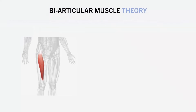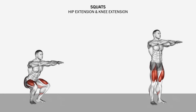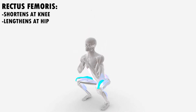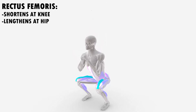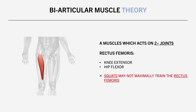This brings up the biarticular muscle theory. A biarticular muscle is one which acts on two or more joints. The rectus femoris acts on both the knee and hip, contributing to knee extension as well as hip flexion. This is relevant when performing any squat-based exercise involving simultaneous knee extension and hip extension. As we stand up from a squat, the rectus femoris lengthens at the hip joint but shortens at the knee joint, so it likely won't maximally contribute to the movement. Because of this, squats may not be the best exercise to train the rectus femoris, though this doesn't apply to the vastus muscles since they only act on the knee joint.